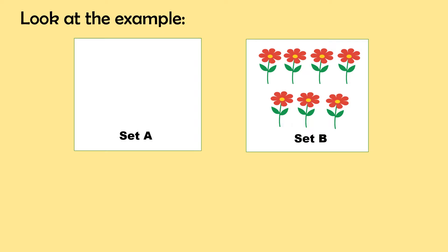Look at another example. In set A, there is no flowers. And in set B, there are seven flowers. Now, how many flowers do we have altogether? When you add zero to any number, the sum is equal to the number itself. So, we can write this as zero plus seven is equal to seven. And that is identity property.